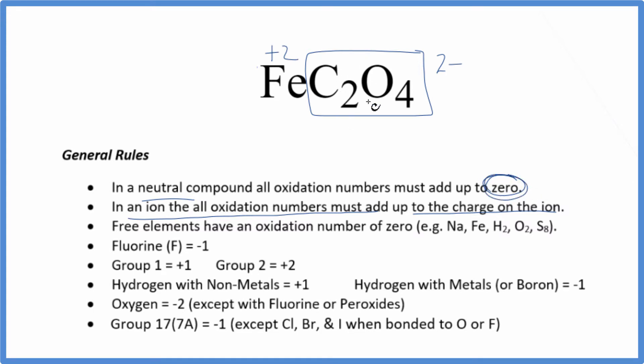If we want to figure out the carbon here in the oxalate ion, we can do that as well. We could call the carbon x, we don't know what that is. Oxygen is almost always minus 2, just a few exceptions.